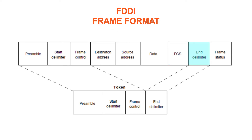The end delimiter contains unique symbols that cannot be data symbols, indicating the end of the frame. The frame status field allows the source station to determine whether an error occurred, and identifies whether the frame was recognized and copied by a receiving station.